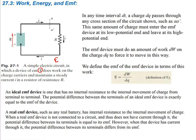In any time interval dt, a charge dq is going to pass through any cross-section of the circuit shown. In a small increment of time, there's going to be a net flow of charge dq. The same amount of charge must enter the EMF device at its low potential end and leave at its high potential end, so while charge is flowing through here, charge must also flow into the low potential end and come out of the high potential end.